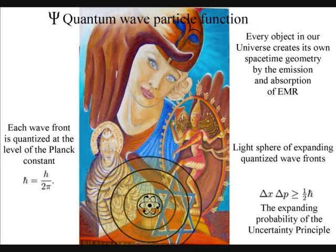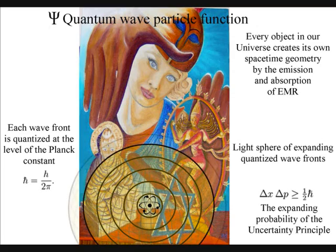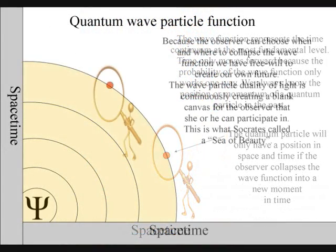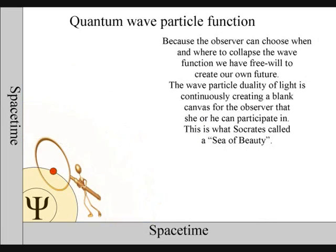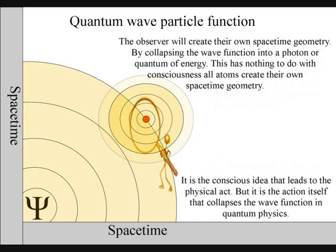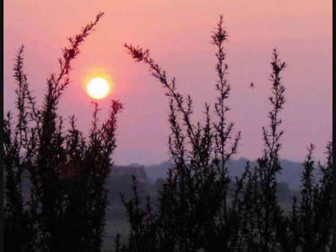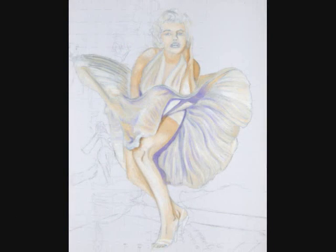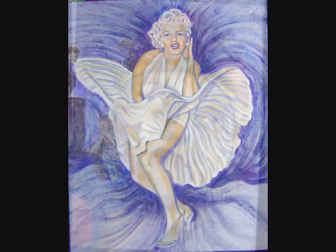This has nothing to do with consciousness. All atoms create their own spacetime geometry. But it is because life, in the form of an observer, can choose when and where to collapse the wave-function that we have free will. Life will create its own ripples in the fabric of spacetime, forming its own broken symmetry of its own evolutionary path. The forward momentum of light is continuously creating a blank canvas for the observer that she or he can participate in. This is what Socrates called a sea of beauty.